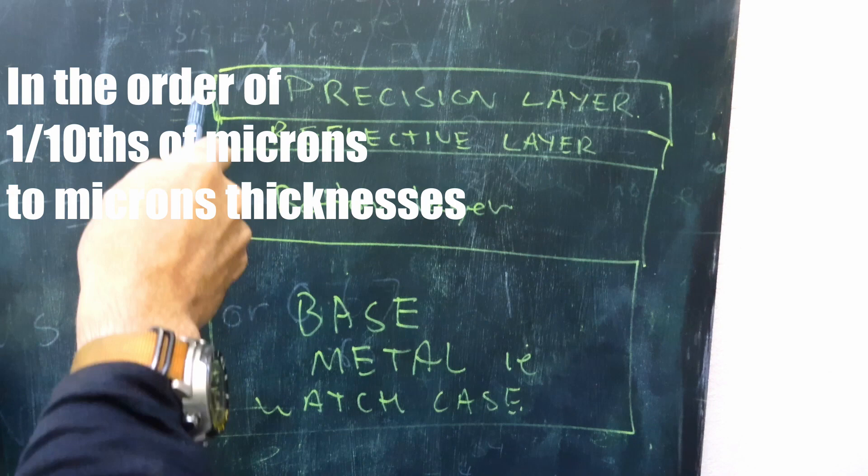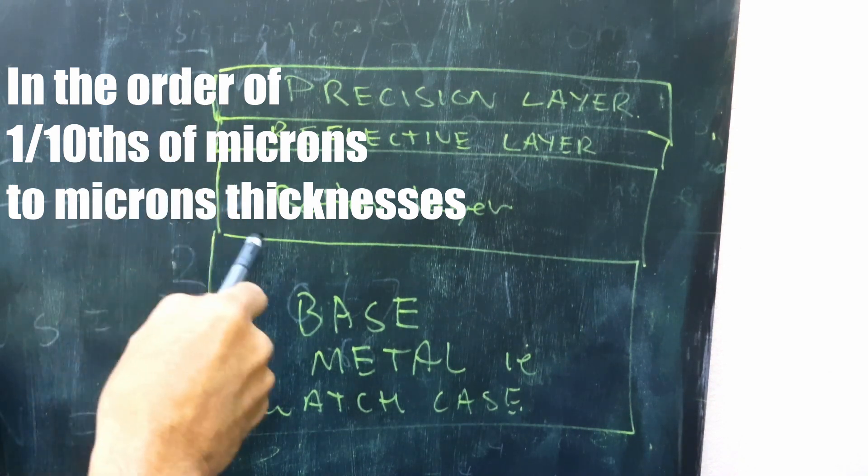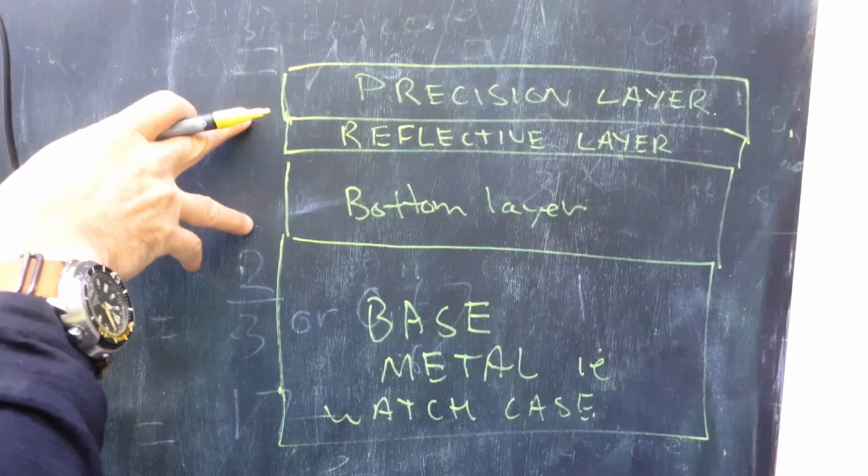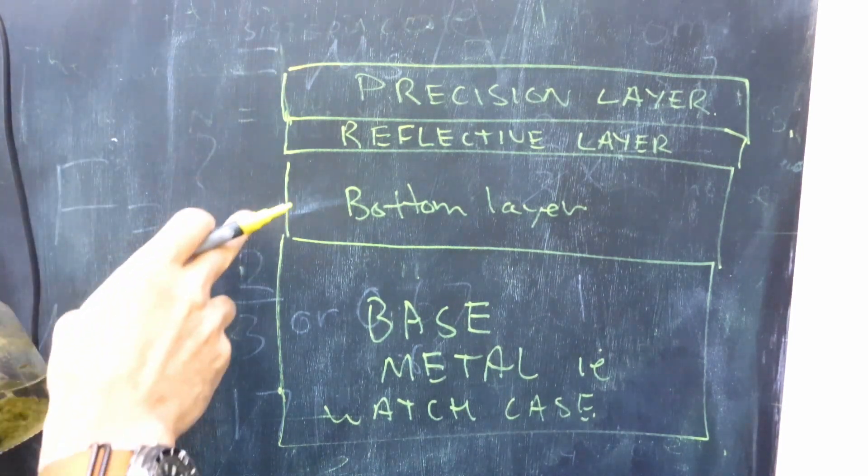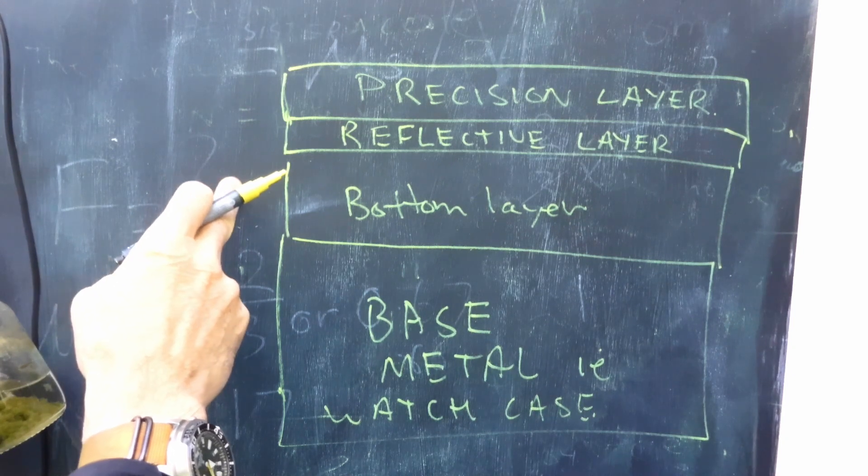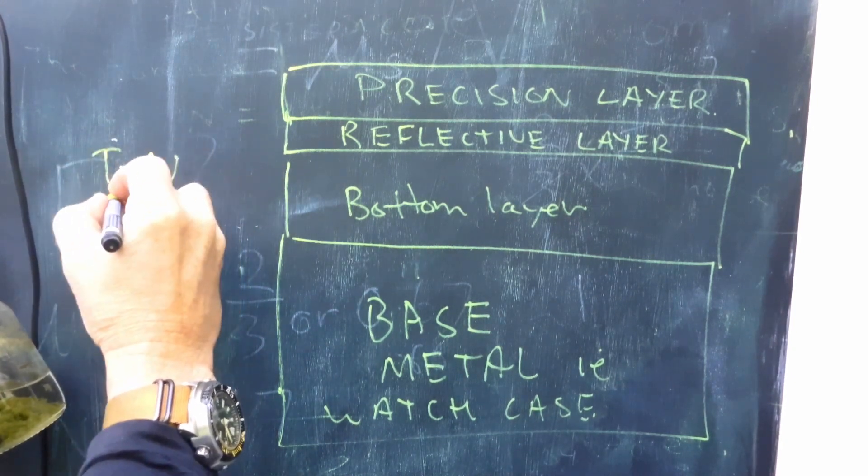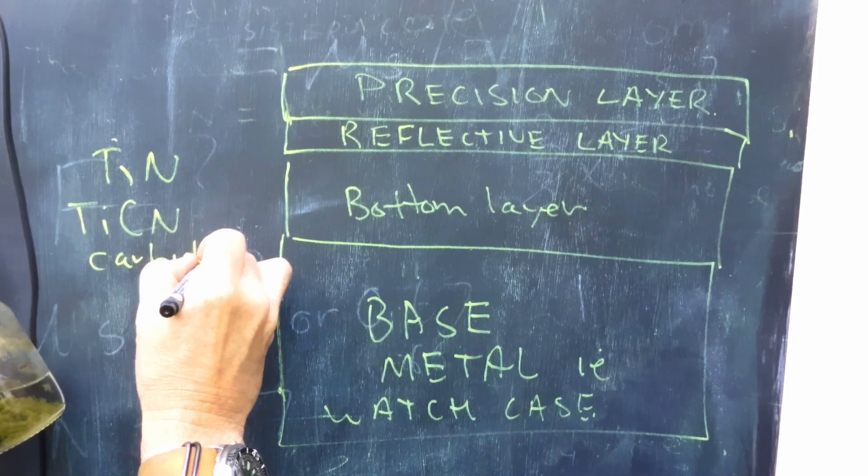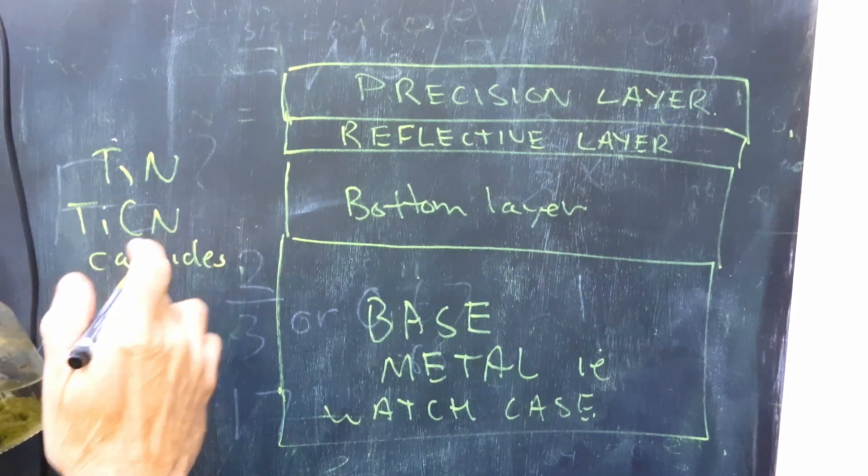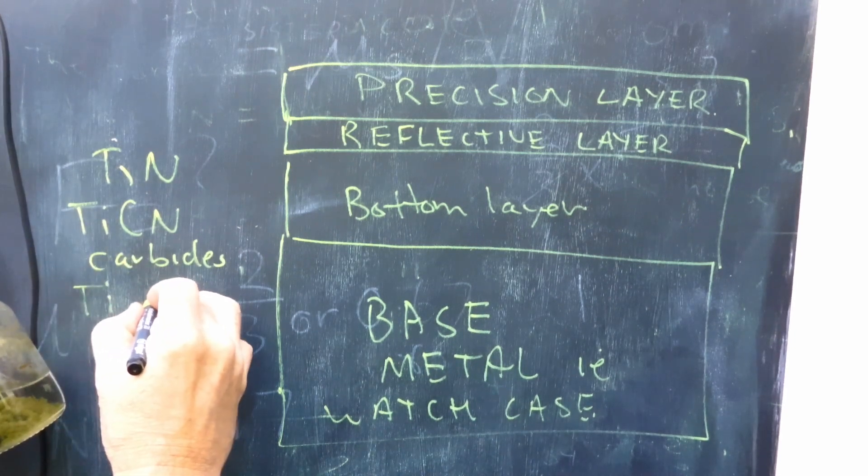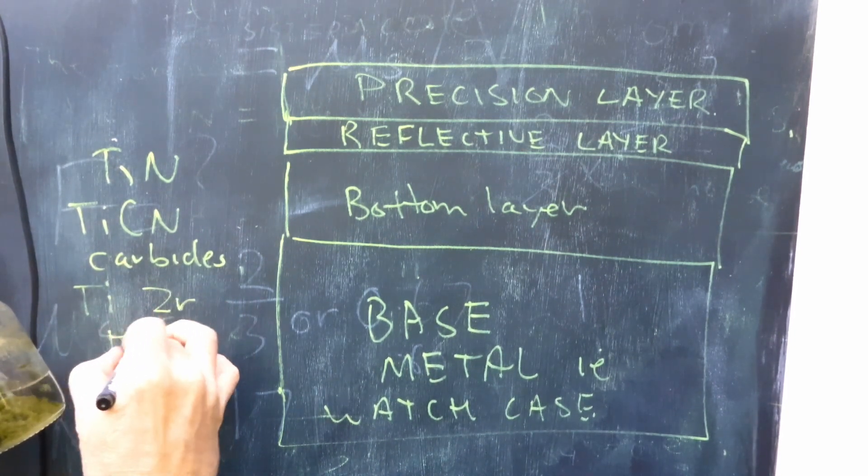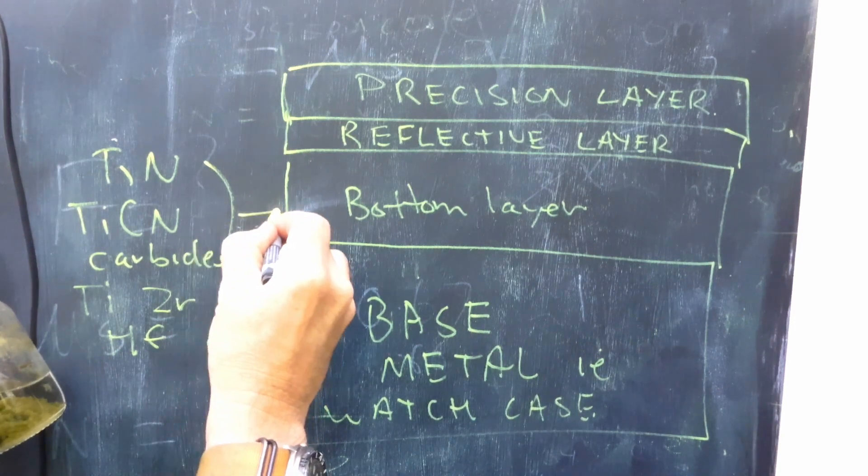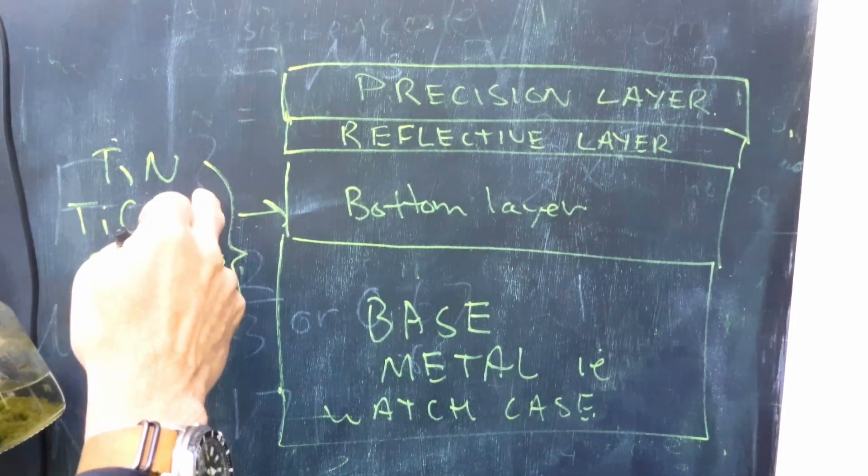Then we have these coatings on top, and it comprises what's known as a bottom layer, a reflective layer, and a precision work layer. The watch manufacturer is going to put special coatings on here, basically on a molecular basis. What is this bottom layer? The bottom layer can be titanium nitrates, titanium carbonitrates, or carbides. Those metals could be any number of titanium, it could be zirconium, and hafnium. These kinds of metals can comprise the bottom layer. So these are actually ceramics, a type of ceramic on there.